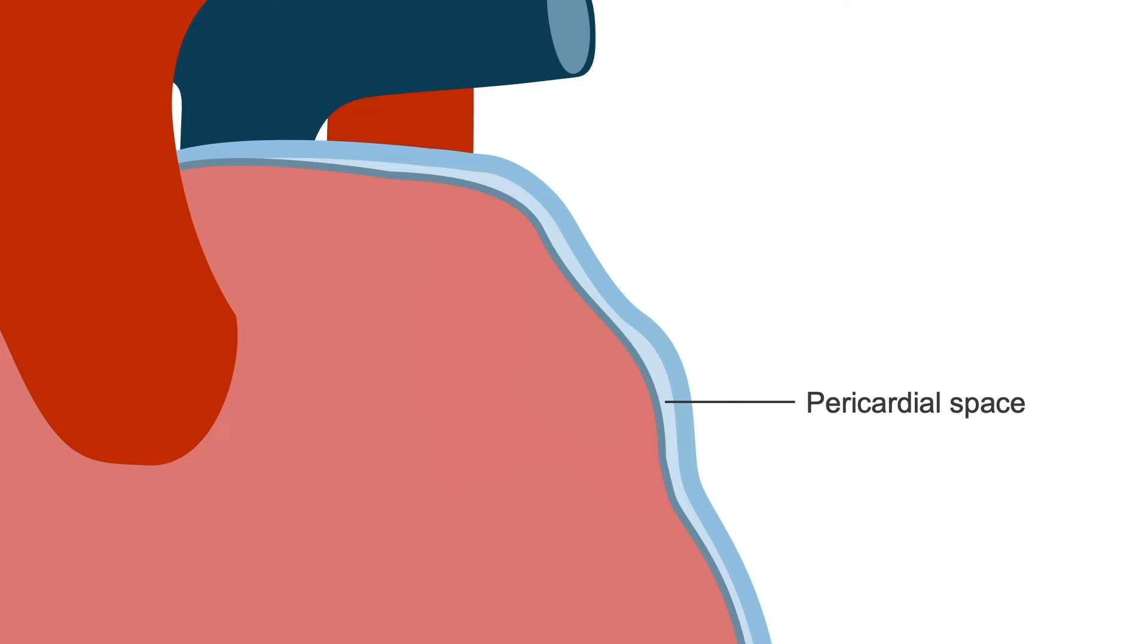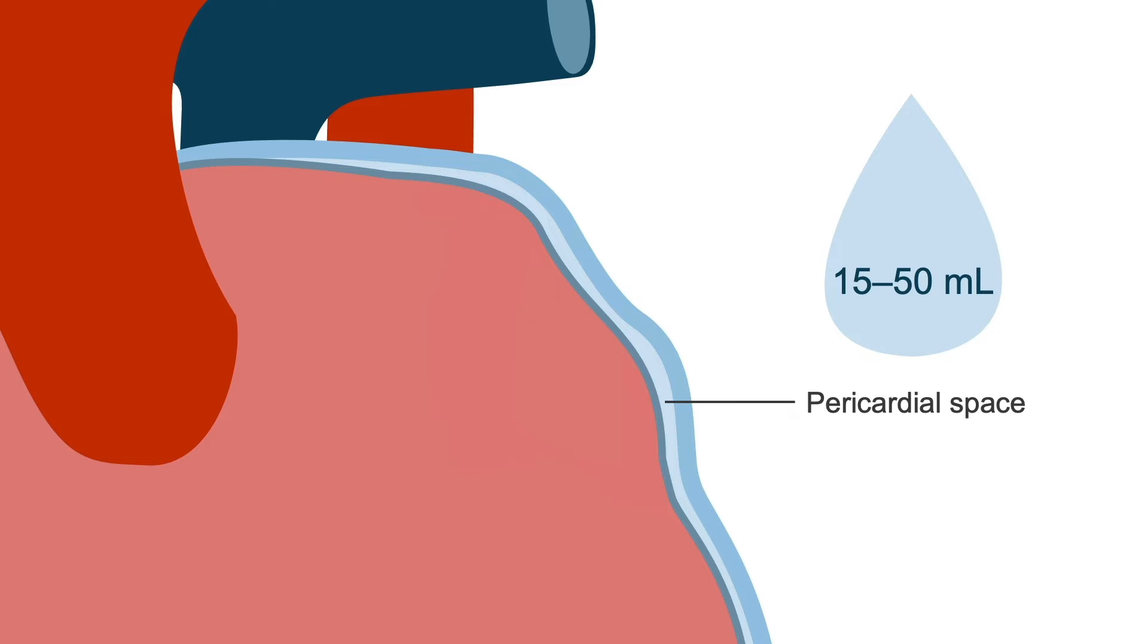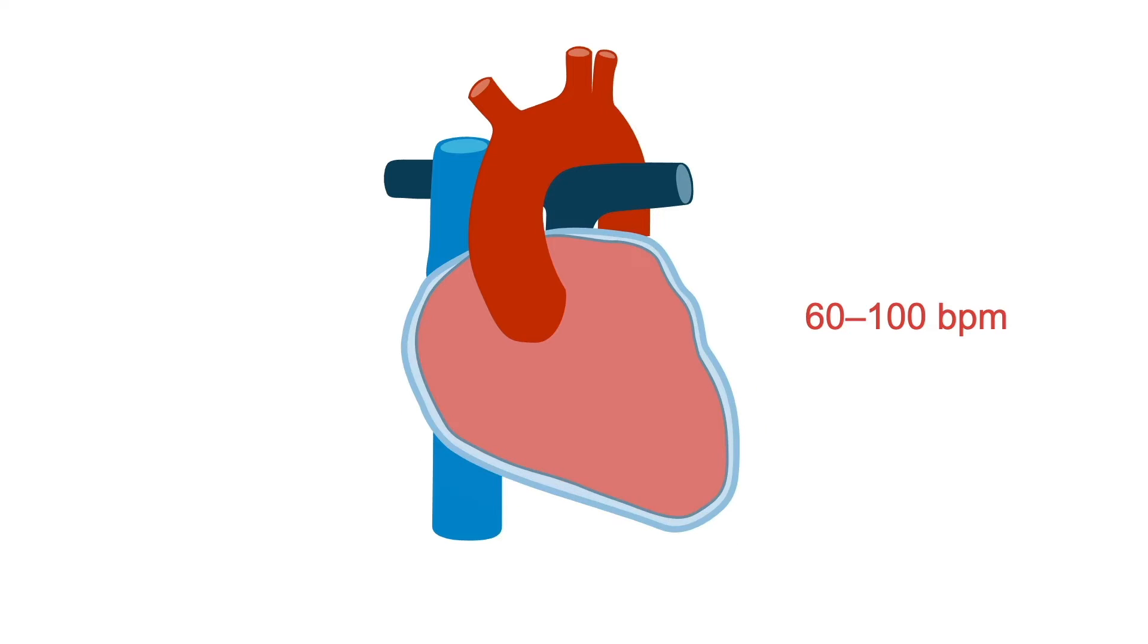The pericardial space is the space between these two layers. In healthy circumstances, it contains a small amount of fluid, about 15 to 50 milliliters, which acts as a lubricating fluid. The heart is a high-power machine, pumping 60 to 100 beats per minute or BPM. Pericardial fluid is there to decrease friction and allow for smooth movement of the heart.